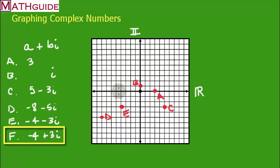And where's F? We're going to go negative four, but now we're going to go three up this time. And there you go, you've got F. There's our conjugates F and E. That's what it looks like when we graph complex numbers. Let's go to the next section.